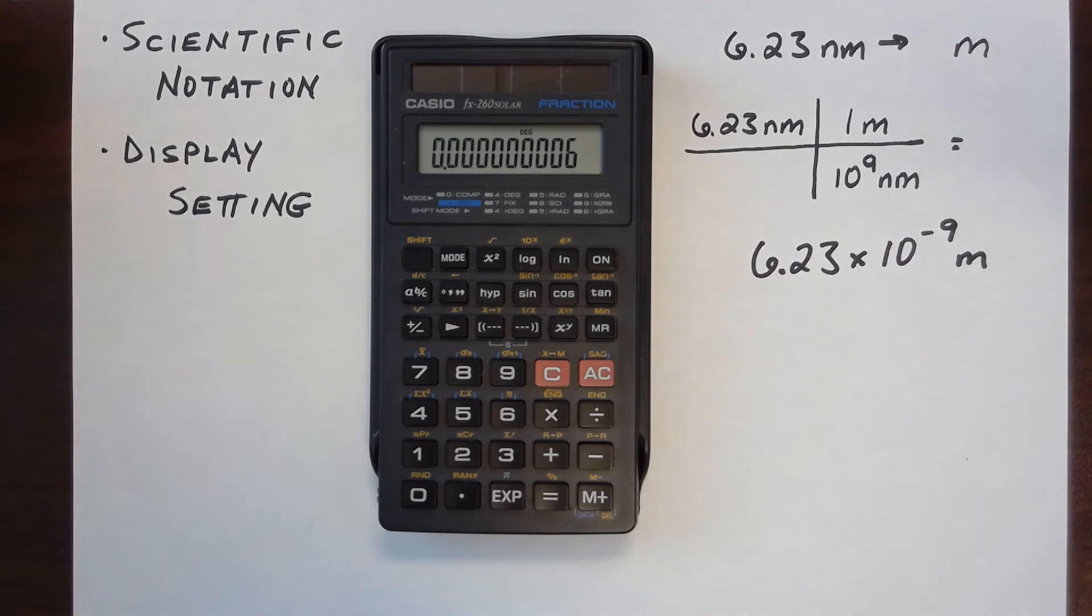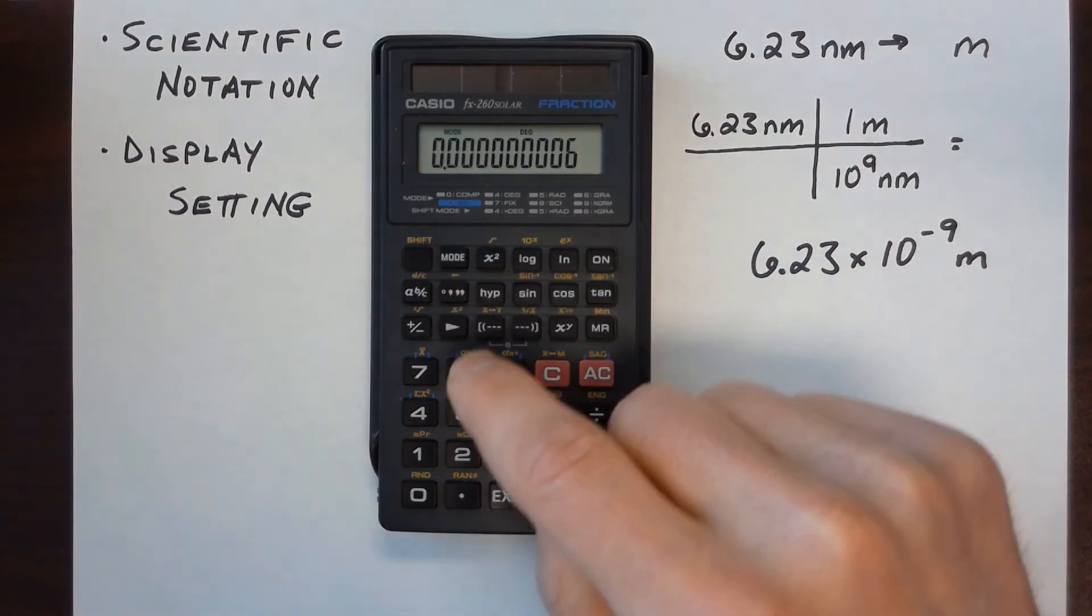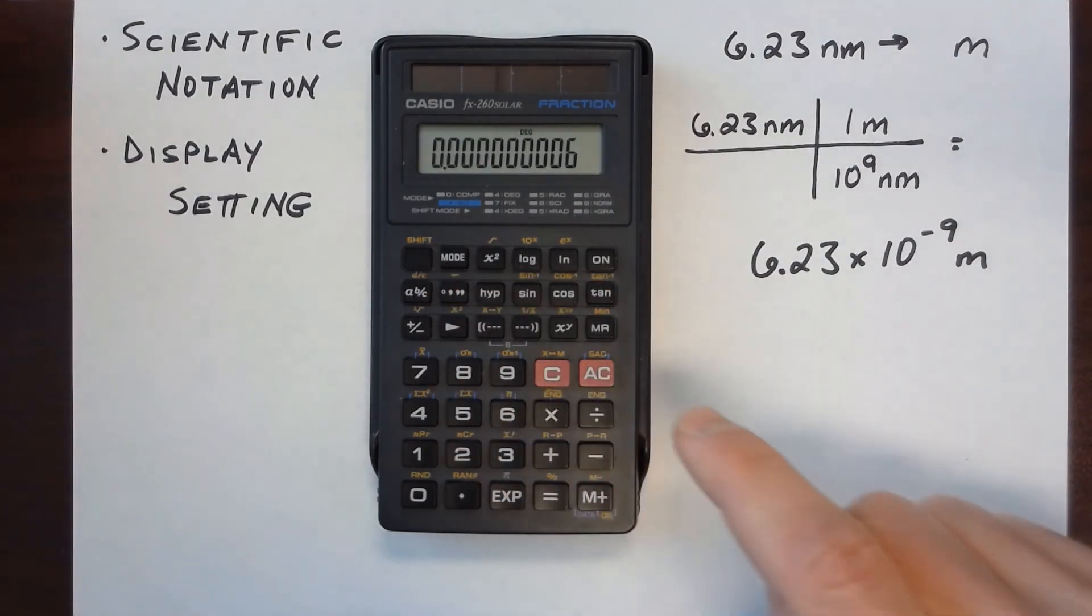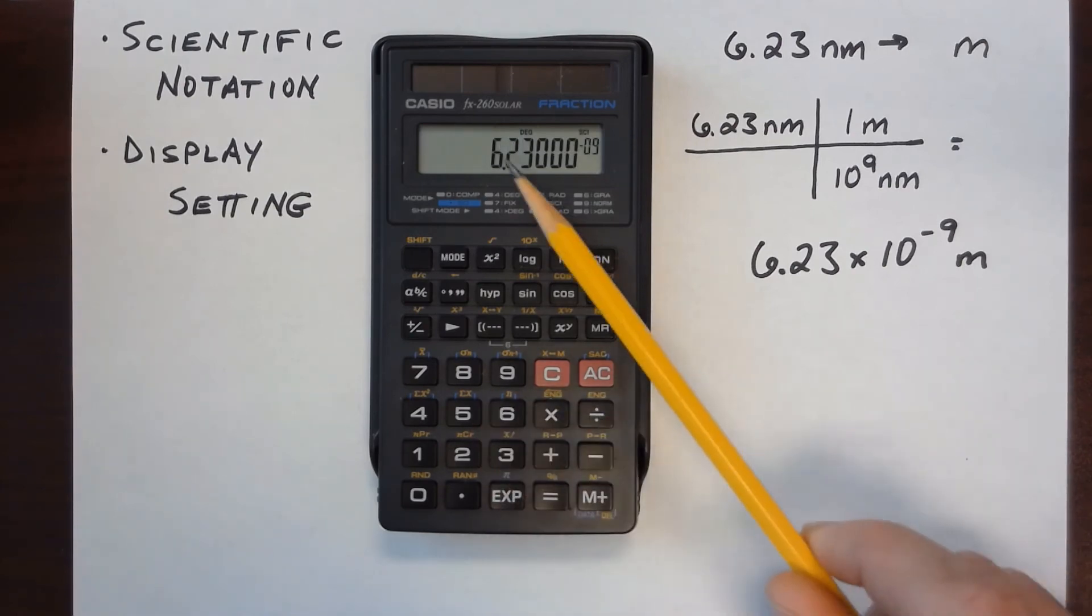So if I hit the mode button and the number 8, I need to tell the calculator how many digits I want the calculator to display. So I can enter some large quantity like 6, and it's going to give me 6 digits.